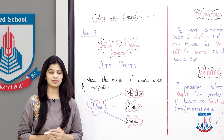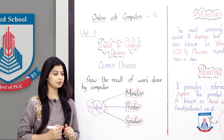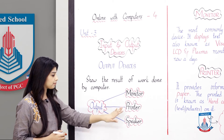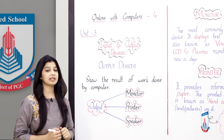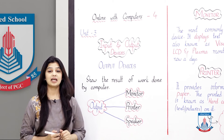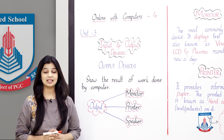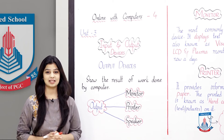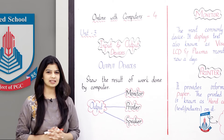Output Devices — we call them Monitor, Printer, and Speaker. We call these Output Devices. Let's go and see how each of these three devices works.